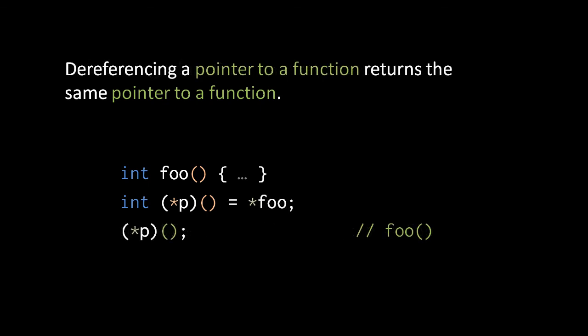Another strange thing about function pointers is that, like with arrays, there's no such thing as a function value, so dereferencing a function pointer cannot return a function. Instead, dereferencing a function pointer value simply returns the same function pointer value. The dereference of the function name foo returns the same function pointer value represented by the name. When we dereference p, we get the same function pointer value, which we can then invoke like any other function pointer value. I'm not sure why dereferencing function pointers is allowed, because it doesn't do anything useful.